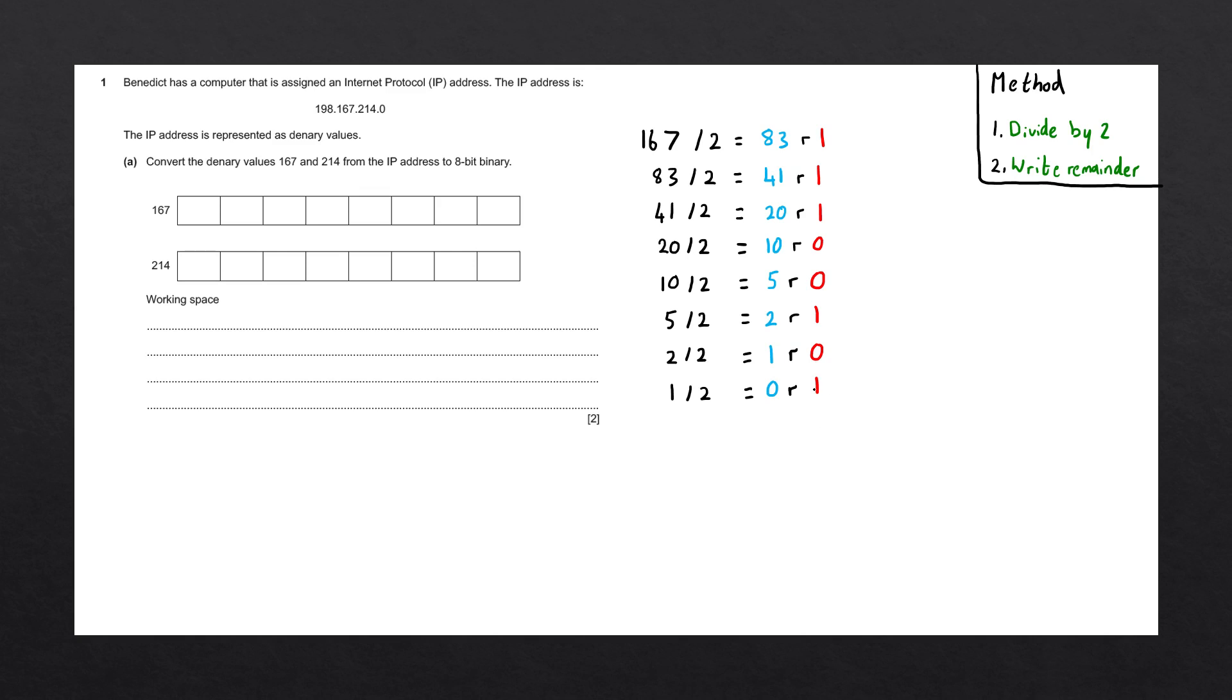And our binary number answer can be taken by reading the remainders from the bottom going up. So let's go ahead and write these down. Our answer is going to be one, zero, one, zero, zero, one, one, and one. And that is our answer. We can fill this out over here. And that is the first part of our solution.